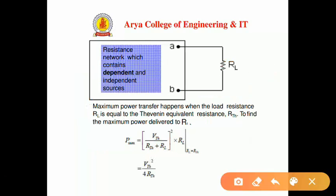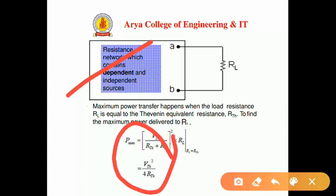For the maximum power transfer theorem, the load resistance equals the Thevenin resistance. The maximum power transferred to the load is given by the formula: P_max = Vth² / (4 × Rth), where Vth is the Thevenin voltage and Rth is the Thevenin equivalent resistance.